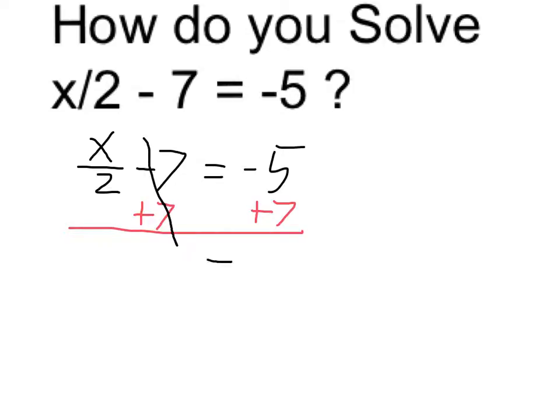So in this case, I'm going to add 7 to both sides to cancel out the minus 7, and that gives me x divided by 2 equals 2.